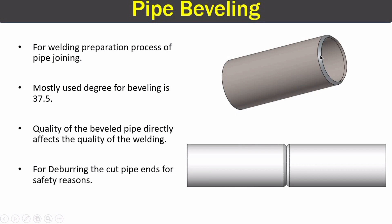Pipe beveling is actually cutting an edge at the end of the pipe, as you can see in this image. This is done for welding preparation in the process of pipe joining. As you can see in this image, we have two pipes and both of them have bevel edges — this is perfect for pipe joining. Most commonly this bevel angle is 37.5 degrees, though it can be any angle other than 45 degrees or 90 degrees.